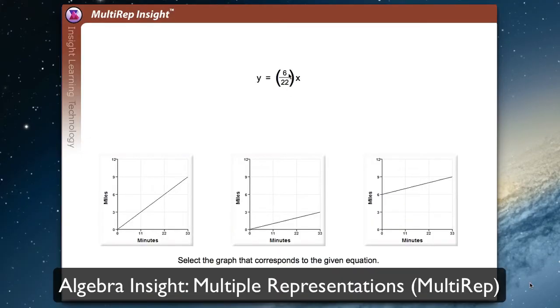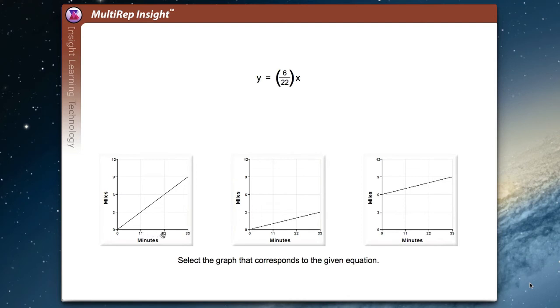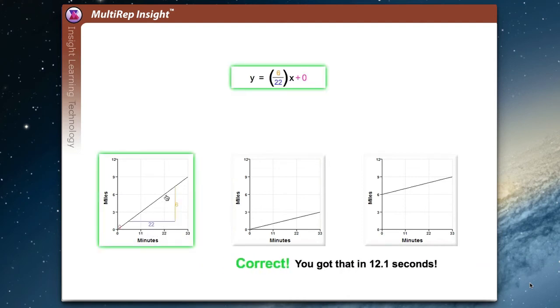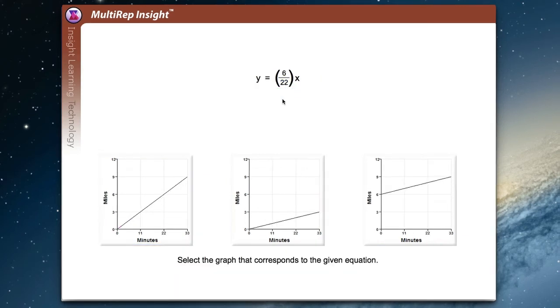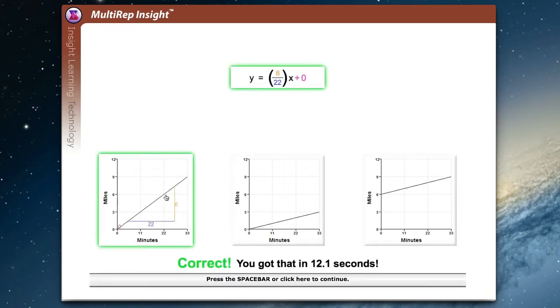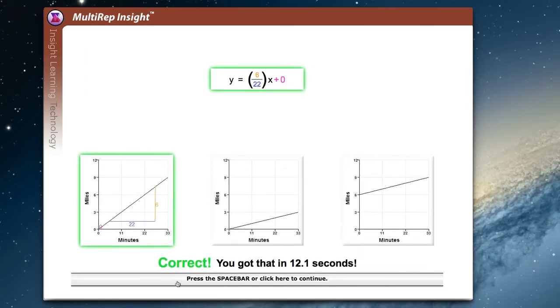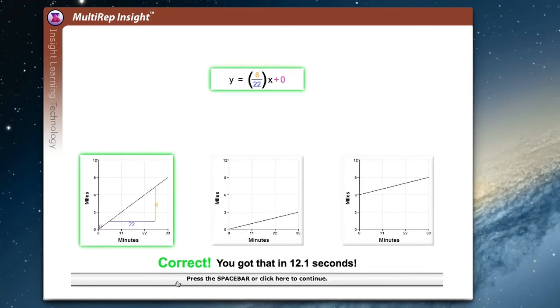Here's an example of an equation at the top and the student has to pick a correct graph. They're asked to see the correspondences across these representations. It dramatically improves students' fluency in extracting structure of each representational type: graphs, equations, and word problems. And these skills transfer to other important mathematical abilities, such as reading a word problem and generating a correct equation.